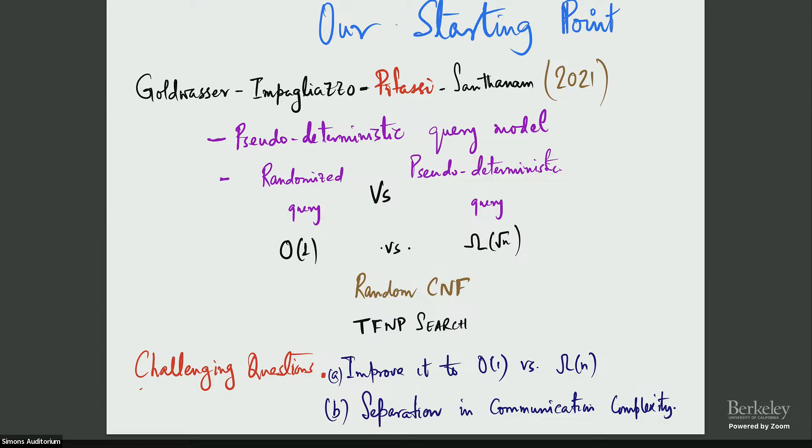So they asked two challenging questions, and these were the ones that really inspired Yogesh, who was the one who got us all together. And these two questions were the following: improve this separation to an order one versus omega n. And I think this is still open. Probably Rahul is going to talk a bit about that after my talk. And the one that I was really interested in is to lift this separation in the context of communication complexity.